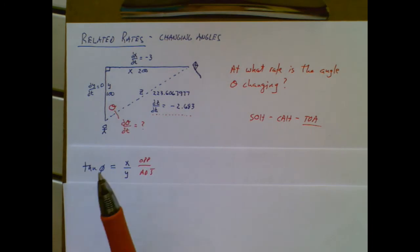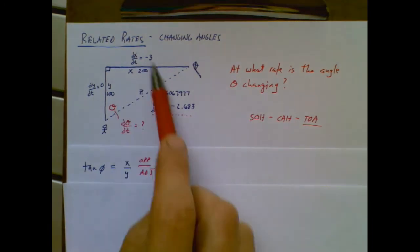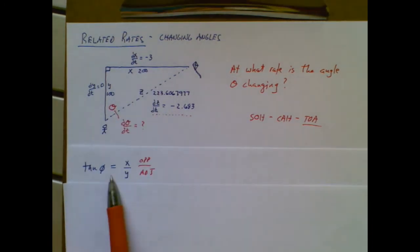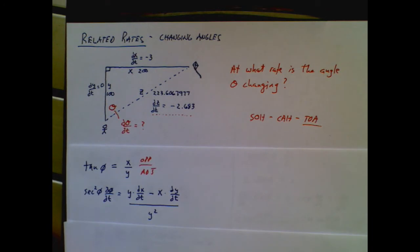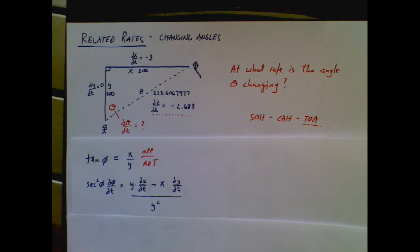So in related rates problems, you label the heck out of the scenario. You choose an equation from your math past that seems appropriate. And then you take the derivative with respect to time. In this case, that derivative ends up being quotient rule.